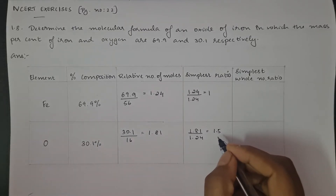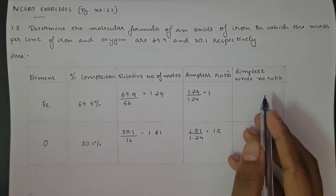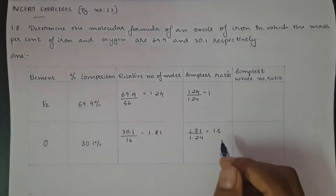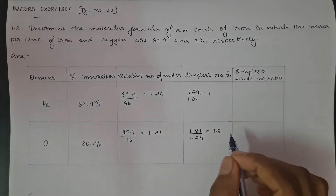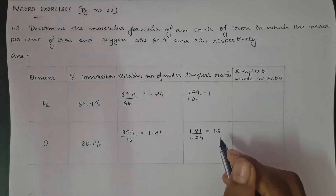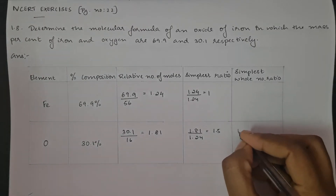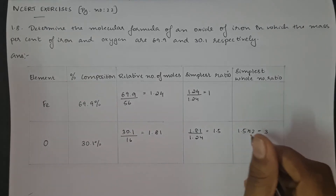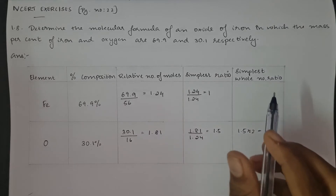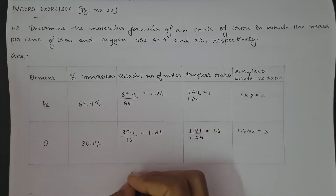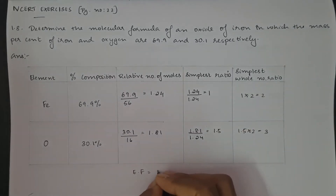Here there's a problem — 1.5 is a decimal number, not a whole number. We must always ensure that the formula for our compound uses a simplest whole number ratio, not a decimal. So we need to convert this decimal into a whole number by multiplying by some number. When we multiply 1.5 by 2, we get 3, which is a whole number. So we also multiply 1 by 2 to get 2.